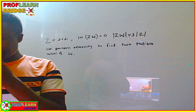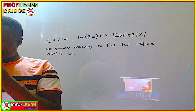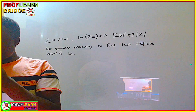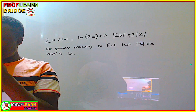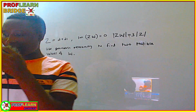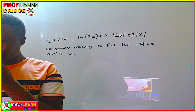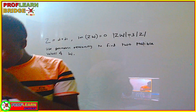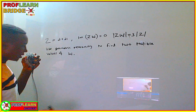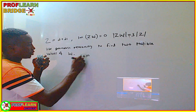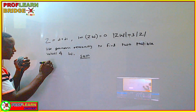We are given a complex number z equals 2 plus 2i. We are also given that the imaginary part of zw is 0, and the modulus of zw is 3 times the modulus of z. Using geometric reasoning, we need to find two possible values of w.